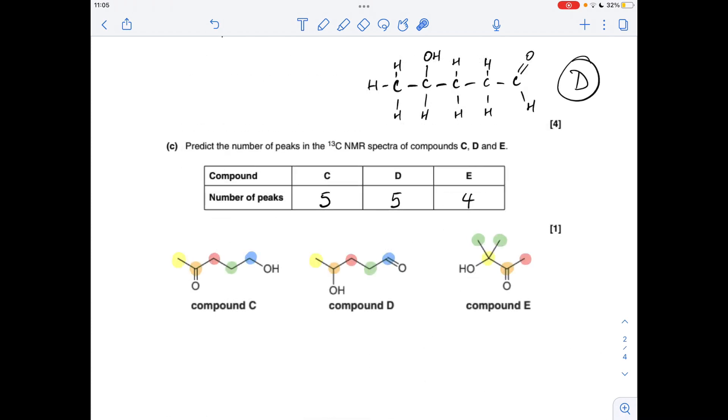Moving on to the number of carbon-13 NMR peaks in C, D and E. You can see I've color coded the carbon environments. So in compound C all of the carbons are different in terms of environment so we get five peaks for C. Likewise for D they're all different, all the carbons, so another five peaks for that one. Whereas in compound E these two methyl carbons are equivalent and then these are all different, so four for E.